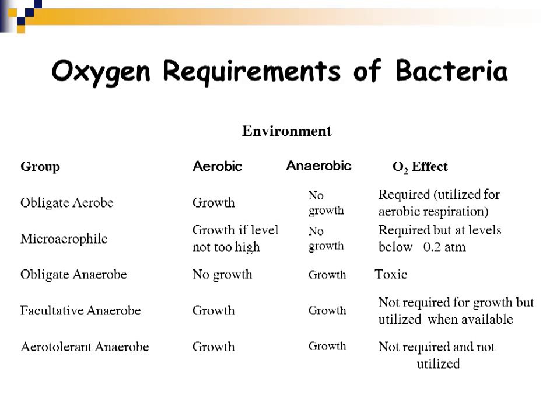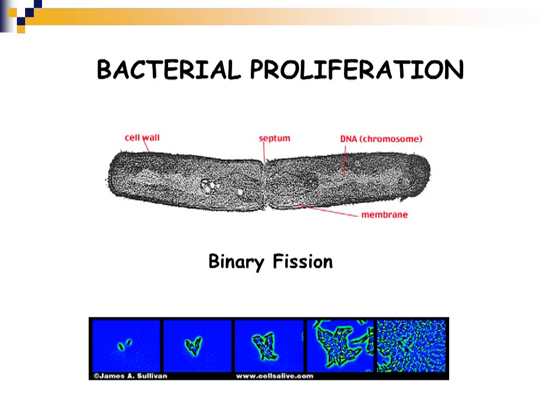Bacteria proliferate through binary fission where the DNA material is copied and then the organism separates and divides — one organism becomes two, two become four, four become eight, and so on.